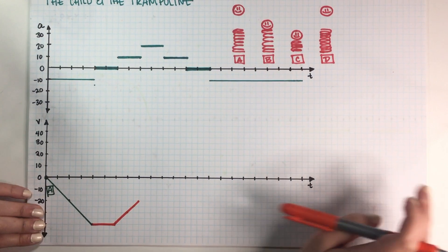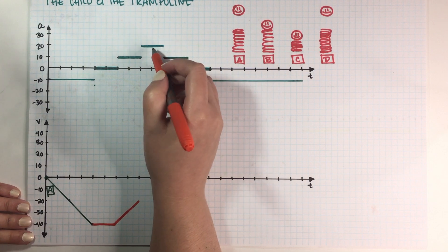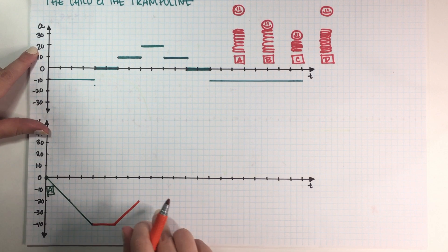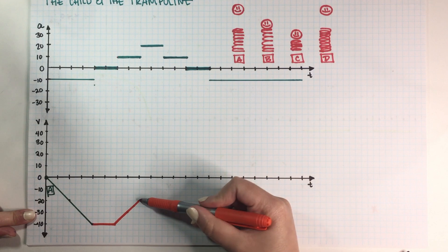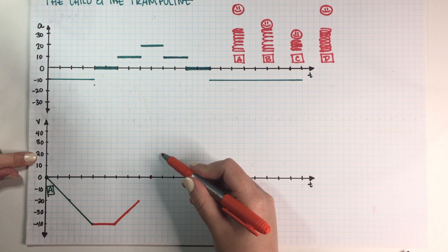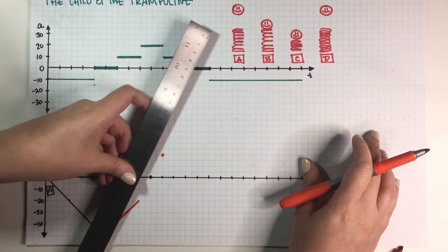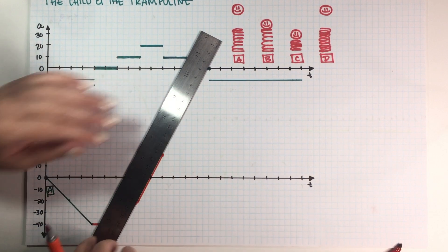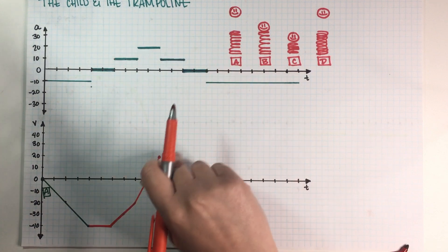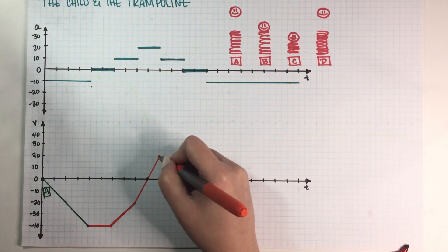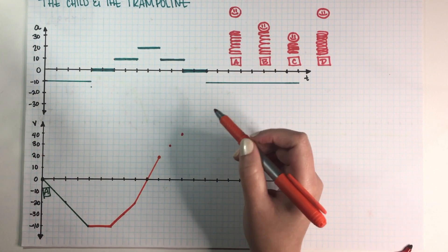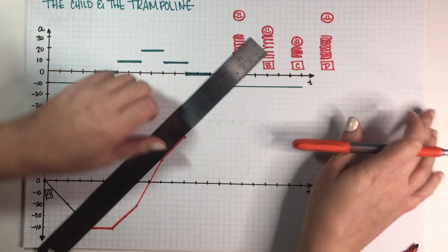Now working with the next part: the acceleration is equal to 20, which means that for every tick mark I move to the right, I need to move 20 tick marks up. So one step right, 20 up; then one step right, 20 tick marks up. I connect the dots for those two tick marks. The next part has positive 10 acceleration again, meaning for every tick mark to the right, I move 10 up. One tick mark right, 10 meters up; another tick mark right, 10 meters up. I connect the dots.